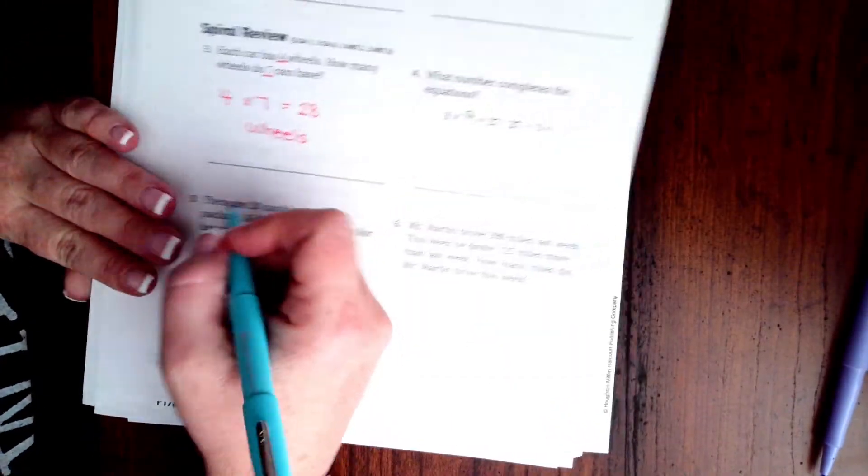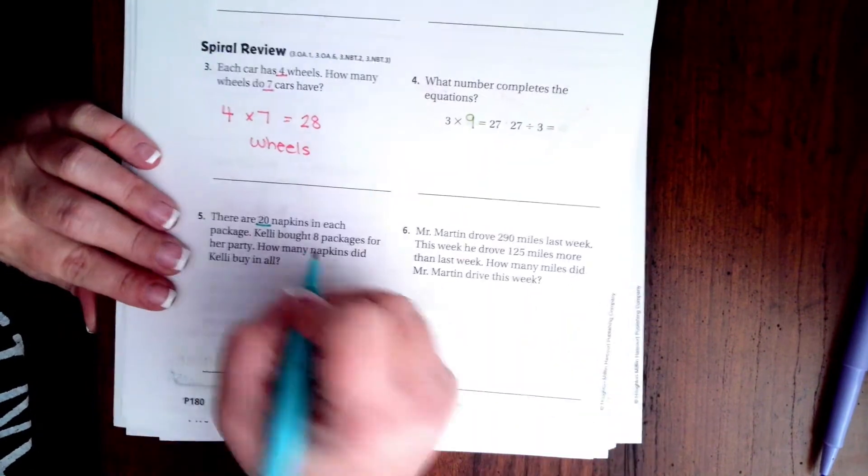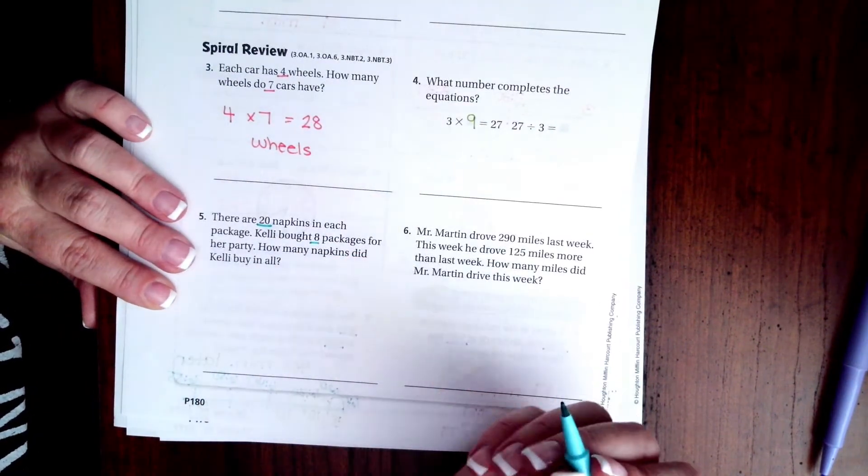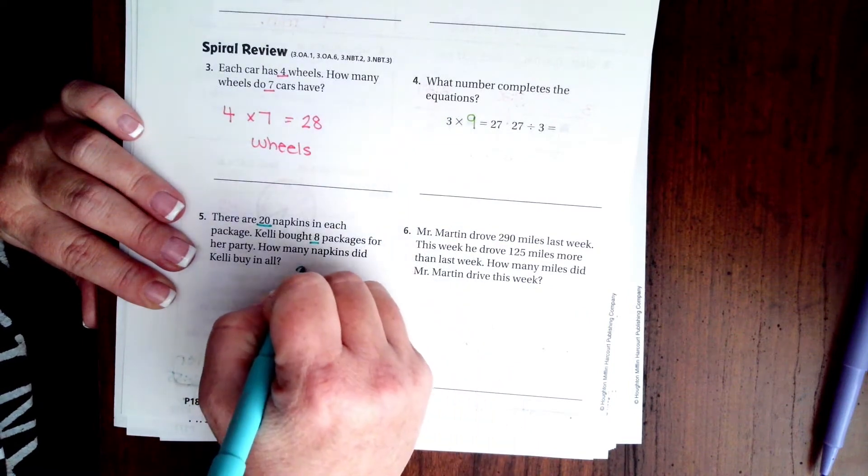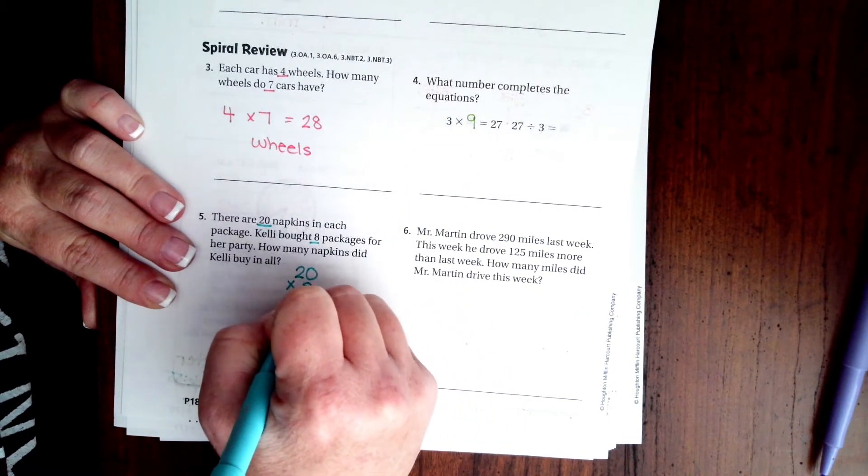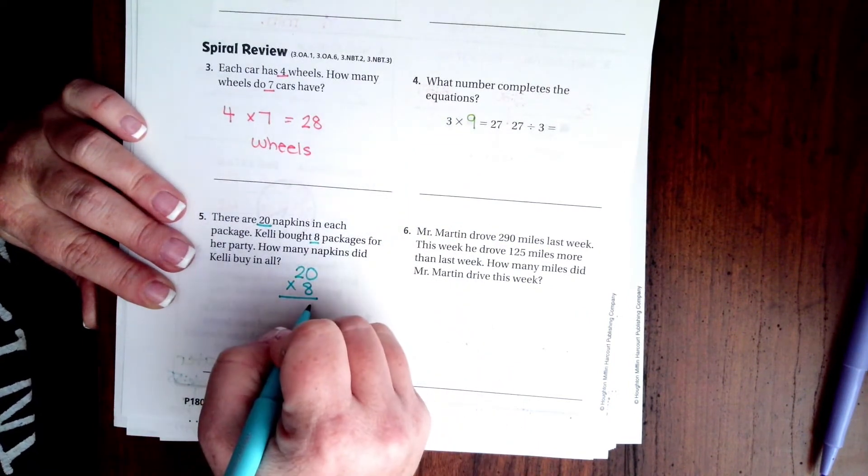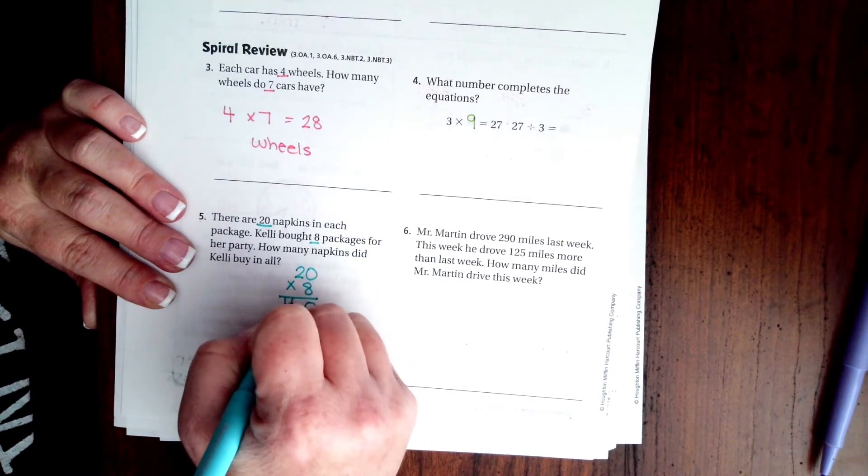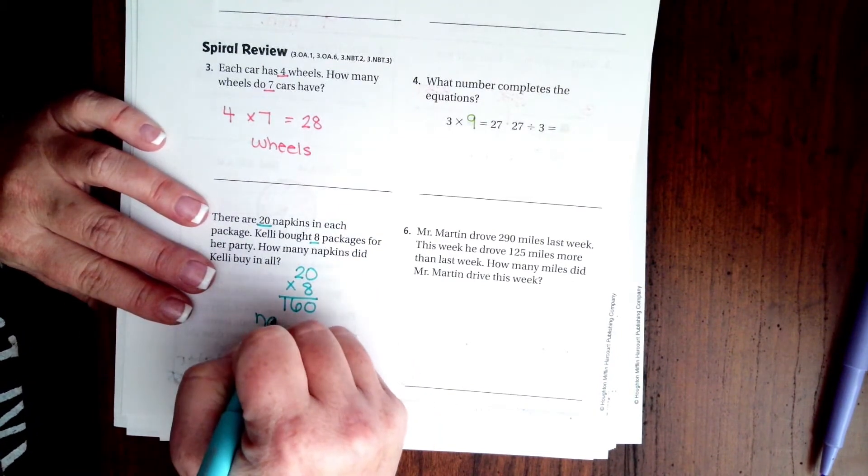There are 20 napkins in each package. Kelly bought eight packages for her party. How many napkins did Kelly buy in all? Well 20 times 8, 8 times 0 is 0, 8 times 2 is 16, that's 160 napkins.